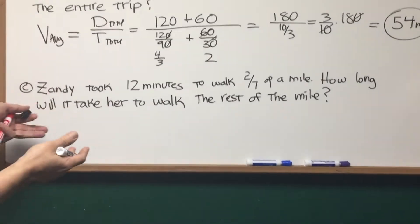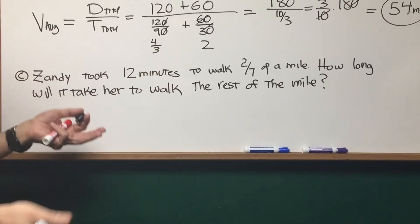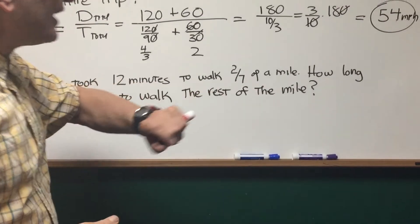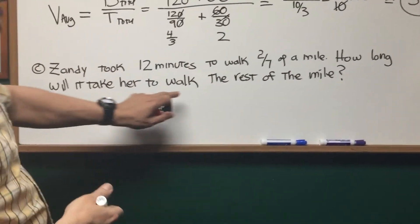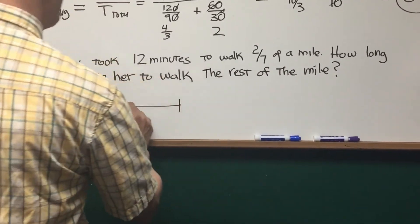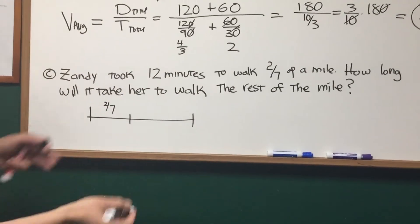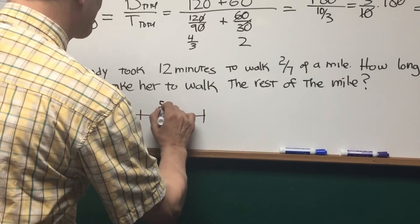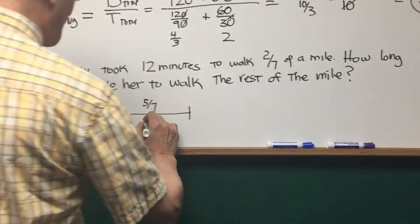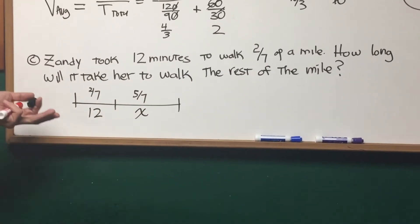Okay, and finally, this is like a little problem that's thrown in. It's not average velocity, but it is related. Let's read it together. Zandi took 12 minutes to walk 2 sevenths of a mile. How long will it take her to walk the rest of the mile? All right, let's draw a little picture here. So here is 2 sevenths of a mile. How much more does Zandi have to walk? Well, that would be 5 sevenths of a mile. So it took her 12 minutes to walk the first 2 sevenths of a mile. How long will it take her to walk the remaining 5 sevenths? Let's just set up a ratio.